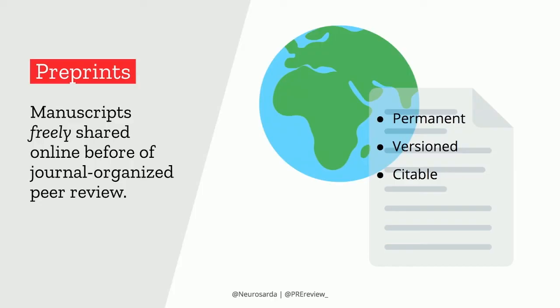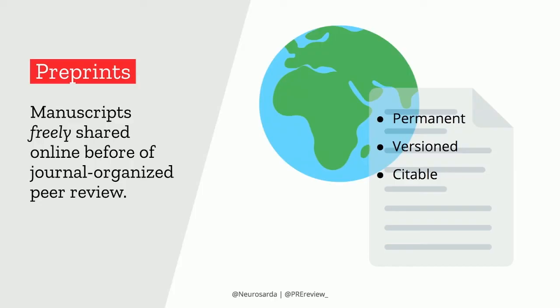Another thing I learned at OpenCon is about preprints — probably the most exciting thing I came back with. Preprints are manuscripts freely available online before formal peer review. Physicists started this in 1991 with arXiv, but now more and more scientists are adopting this process — we have the internet, we can just put our research out there ourselves without waiting for a journal to go through the long peer review process. They're complete manuscripts, permanent, versioned, and citable — they have digital object identifiers in most cases. My favorite quality of preprints is that they can be reviewed by anyone.